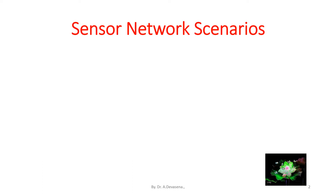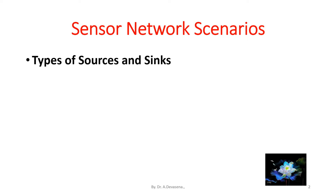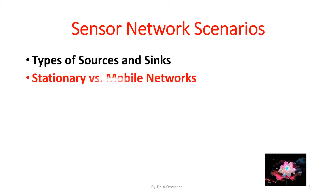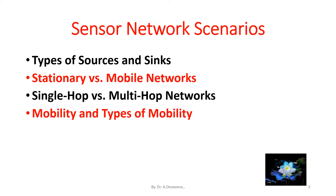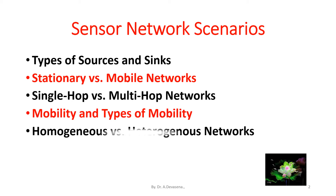Under the main topic of sensor network scenarios, we are going to discuss about types of sources and sinks, stationary versus mobile networks, single-hop versus multi-hop networks, mobility and types of mobility, and homogeneous versus heterogeneous networks.